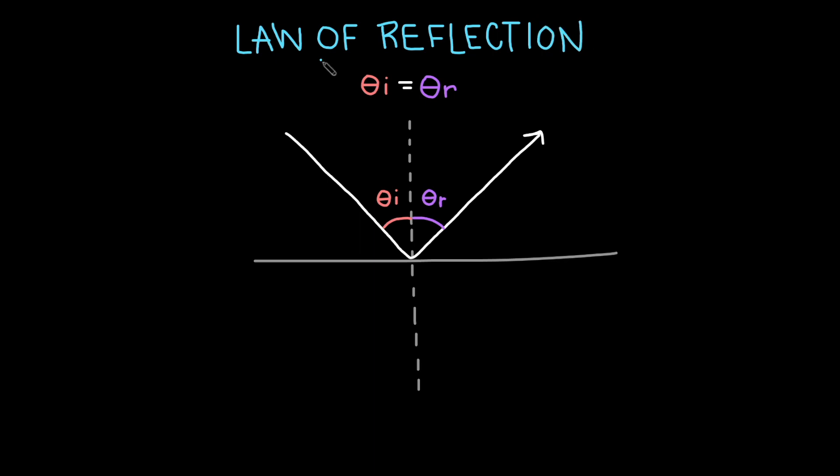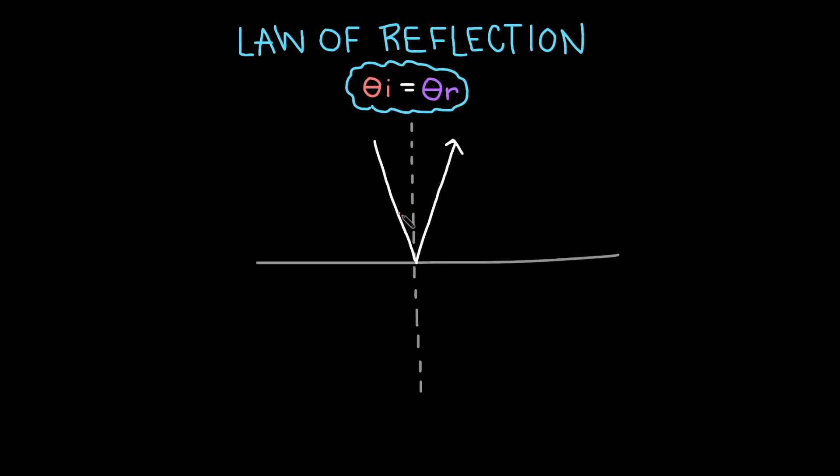Reflection occurs when light bounces off of the surface it hits. The light approaches the surface at an angle of incidence—now incidence just refers to the incoming angle—and bounces off the surface at an angle of reflection. On a smooth surface like a mirror, the angle of reflection is equal to the angle of incidence. This is known as the law of reflection. So if a light ray approaches a mirror at an angle of 20 degrees, the angle of reflection will also be 20 degrees.